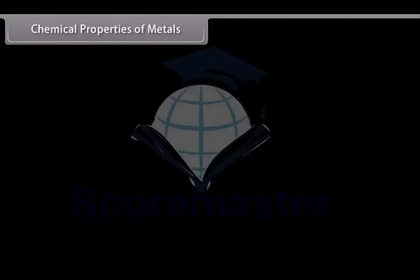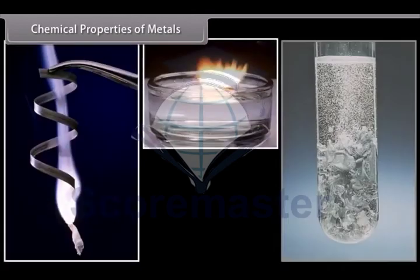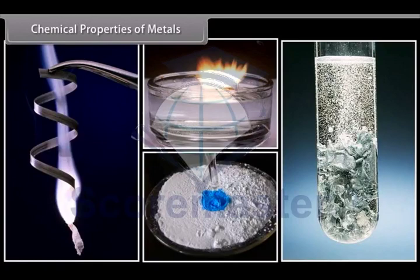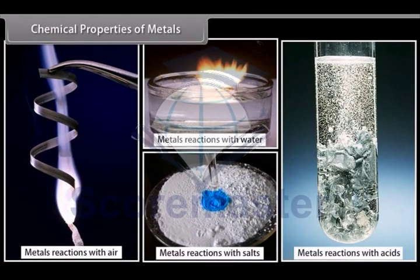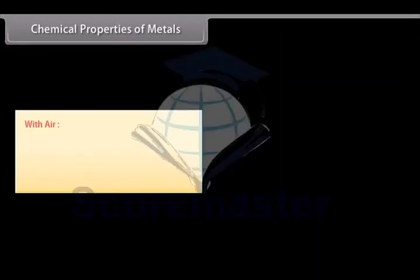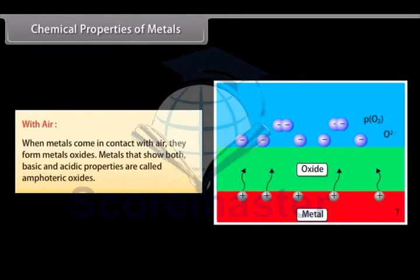Chemical properties of metals. Metals. Let us look at some chemical properties of metals. These properties include reactions of metals with other elements that is air, water, acids and other metal salts. With air. When metals come in contact with air, they form metal oxides. There are some metals that show both basic and acidic properties. Such metals are called amphoteric oxides.